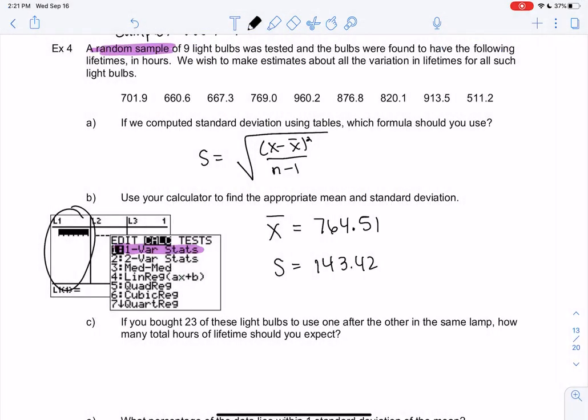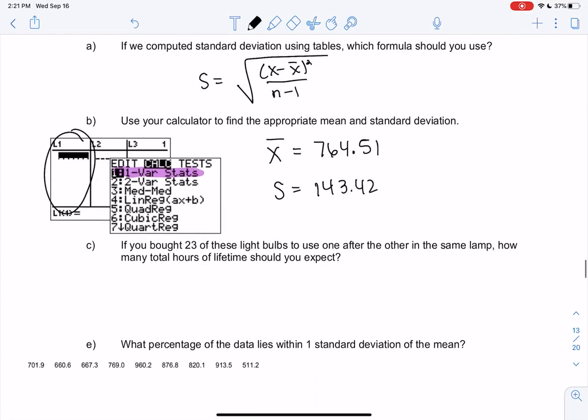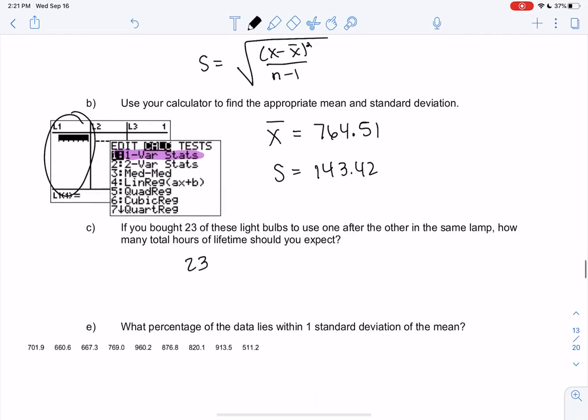All right, so let's answer some follow-up questions. If you were going to buy 23 light bulbs and we wanted to run them back to back - so just use one after the other in the same lamp - how long would they last? How many total hours?